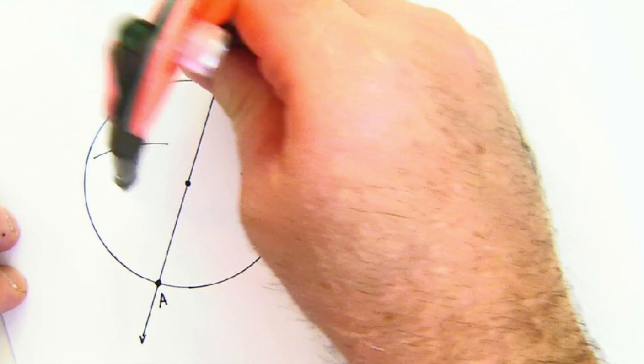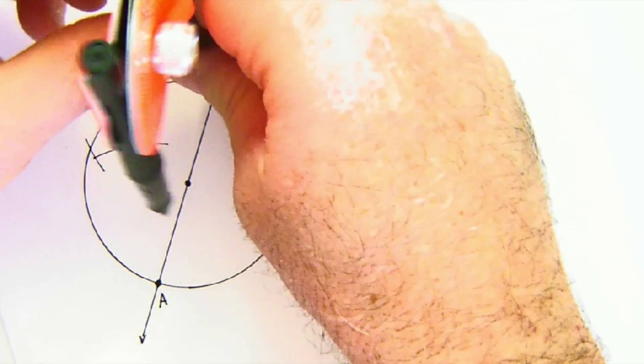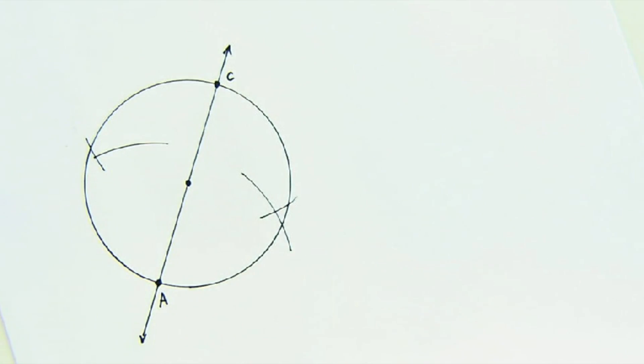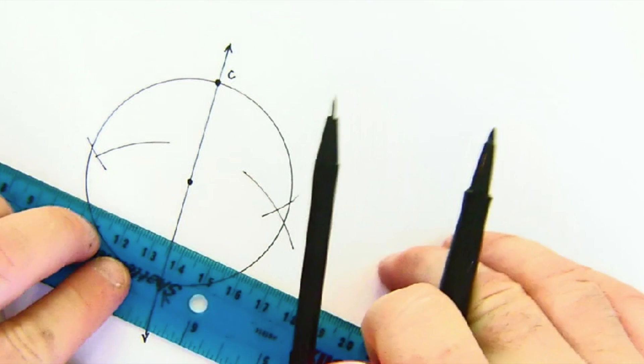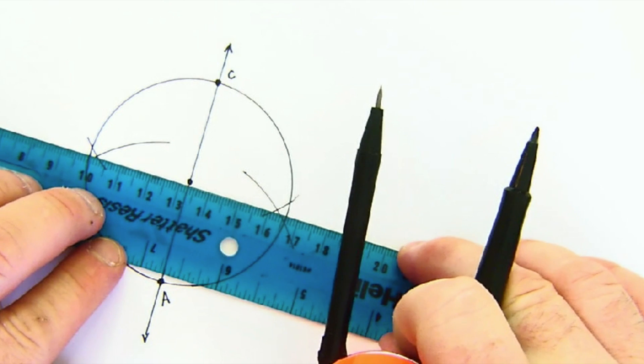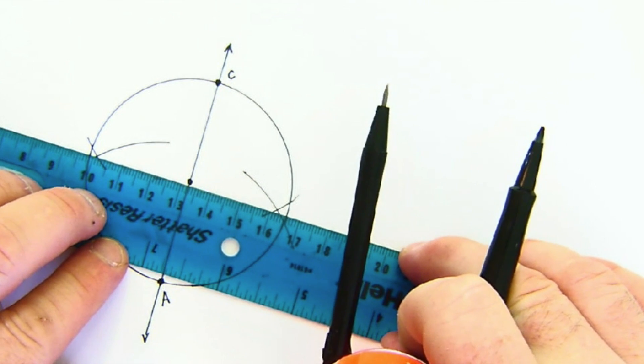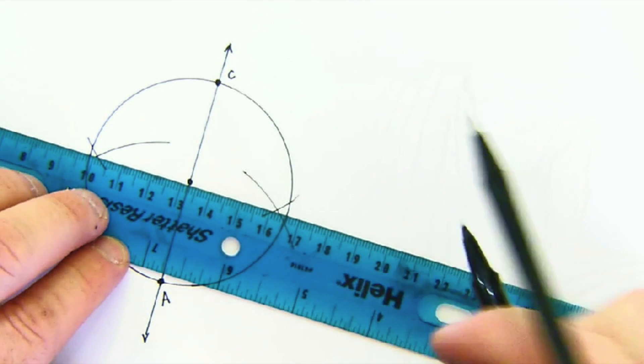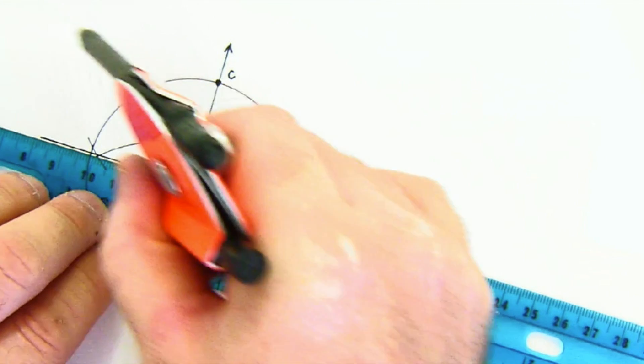And from the other side we use the same length of our compass. By doing so, we create a perpendicular line that goes through the midpoint.